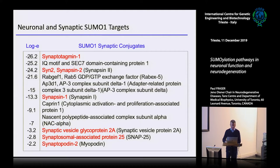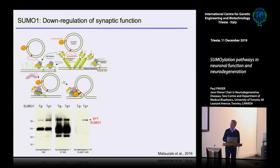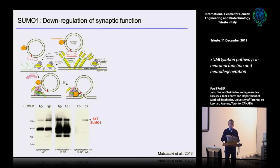What happens to these proteins if they get SUMOylated? Synaptotagmin is a calcium-regulated facilitator of synaptic fusion, along with synapsins and synaptobrevin, which form the complex that facilitates neurotransmission. We validated a bunch of these proteins from the proteomics. If we immunoprecipitate with synaptotagmin and then reprobe with SUMO, you can see the SUMO-related band in the transgenes. In overexpressed Western blots, you can see that the endogenous protein is indeed SUMO-related.